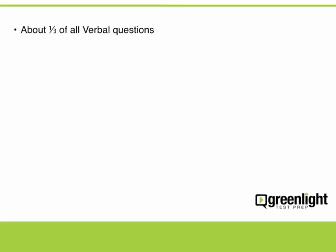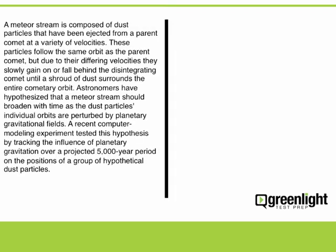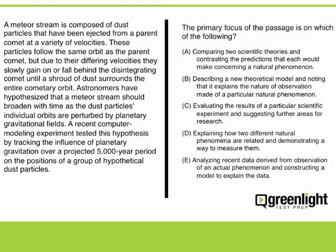To begin, about one-third of the questions in the verbal section of the GRE will be reading comprehension questions. The GRE includes about eight reading passages, each of which is followed by one to six questions that relate to the passage. For each reading comprehension question, a passage appears on the left-hand side of the screen, and a related question appears on the right-hand side of the screen. Your task is to choose the best answer to each question based on what is stated or implied in the reading passage.